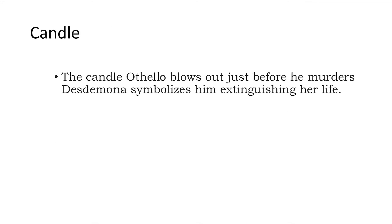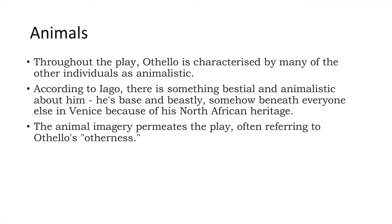The candle is another symbol — when Othello blows it out just before murdering Desdemona, it symbolizes him extinguishing her life. Animal imagery is also significant: throughout the play, Othello is characterized by other individuals as animalistic, which carries strong racial and racist overtones. According to Iago, there is something bestial about Othello, somehow beneath everyone else in Venice because of his North African heritage. This animal imagery permeates the play, often referring to Othello's otherness.